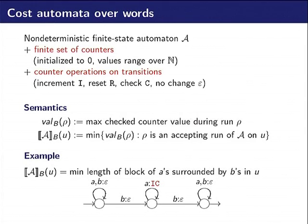For instance, here we want to compute the minimal length of a block of a's surrounded by b's. This is a non-deterministic automaton and each run computes the value of one block of a, so the infimum of all runs will be the minimum length of a block of a's.